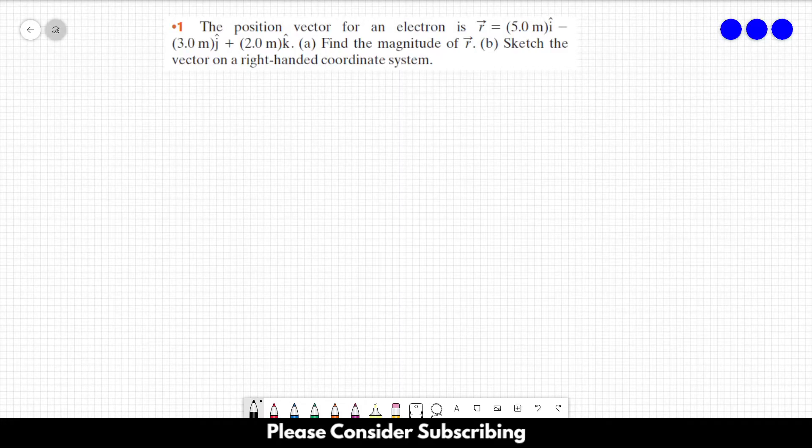Number 1, the position vector for an electron is vector r equals 5 meters in the i direction minus 3 meters in the j direction plus 2 meters in the k direction.